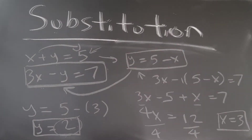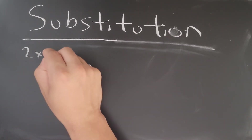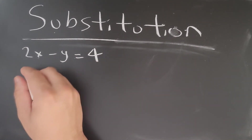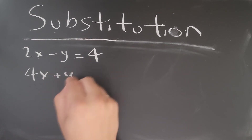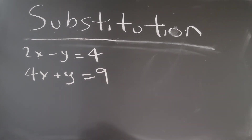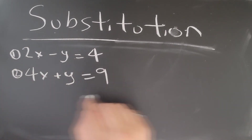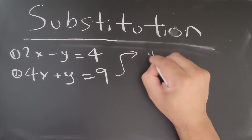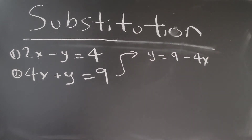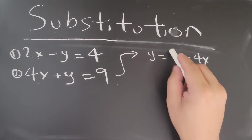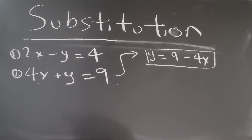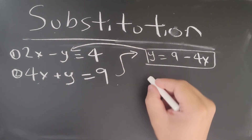Let's do one more — a little more interesting. We have 2x minus y equals 4, and 4x plus y equals 9. Let's take the second equation and rearrange it: y equals 9 minus 4x — I took the 4x and moved it to the other side. Now that we have y equals 9 minus 4x, I can plug this into the first equation.